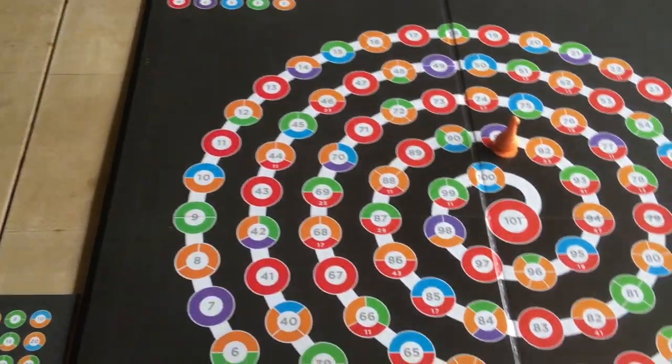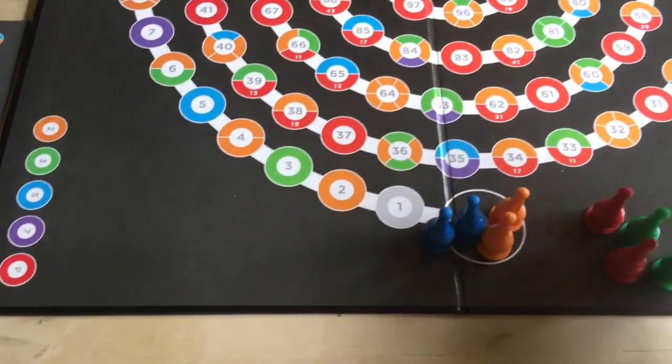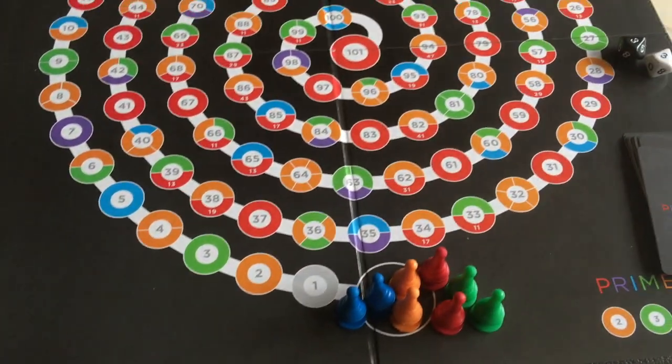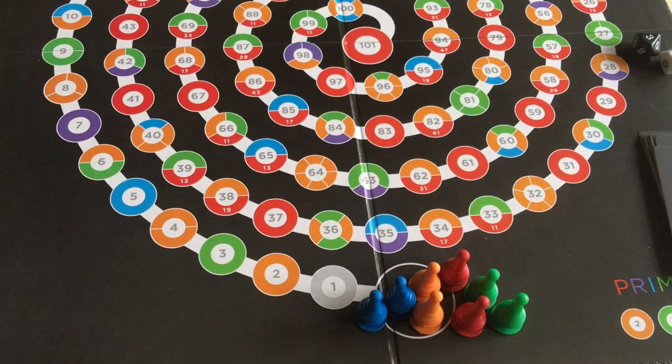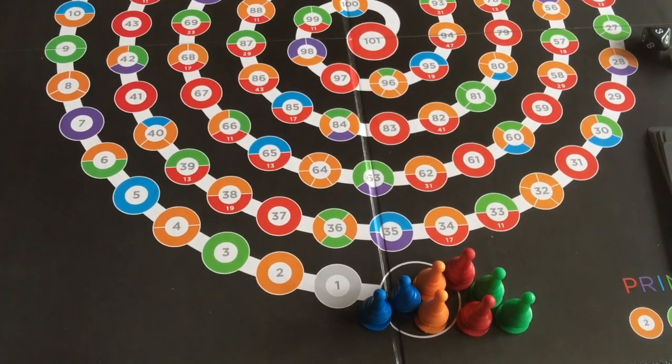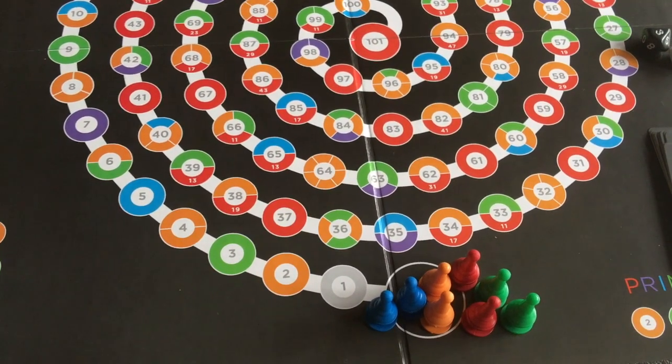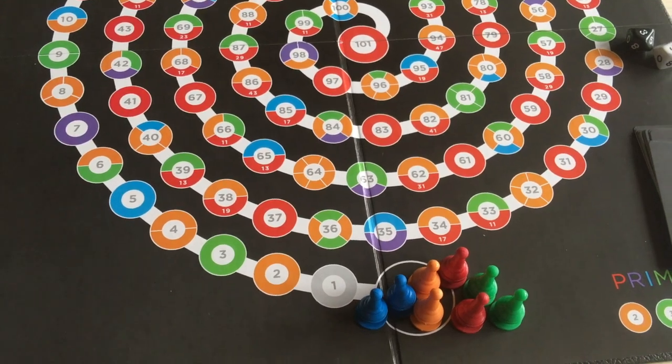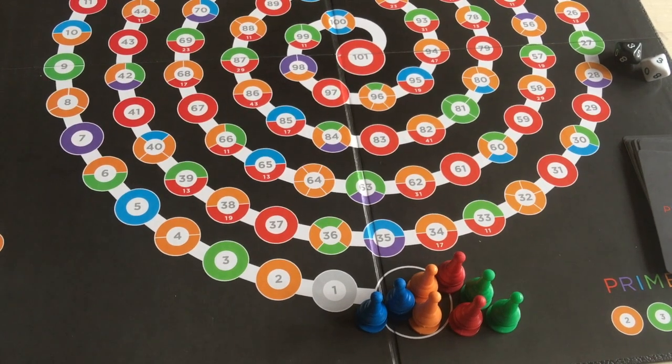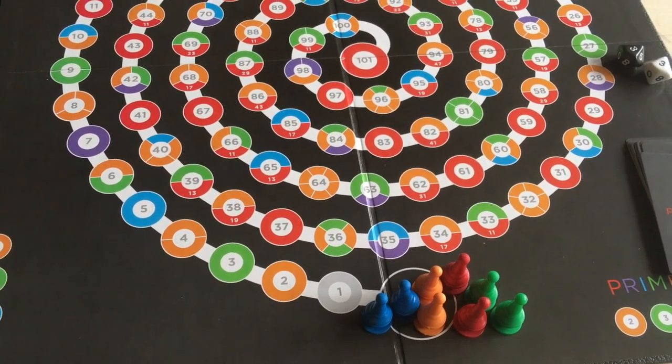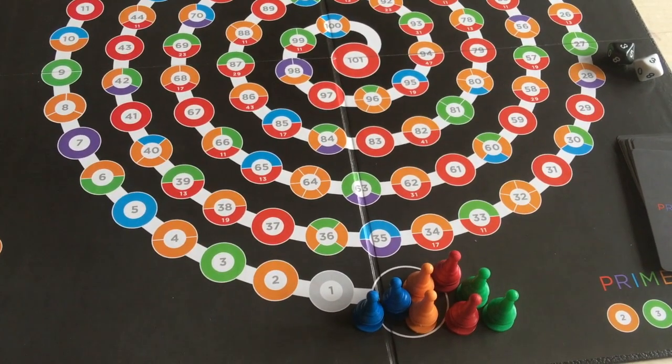That is pretty much everything. The rest of the rules are details that have to do with specifics of if a card comes up and you can't use it, it doesn't apply. If you get a card that says advance and bump the person in front of you, but there's no one in front of you, it just doesn't do anything. This is all you need to know to play the game.